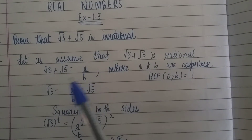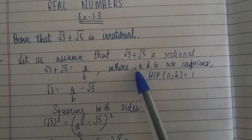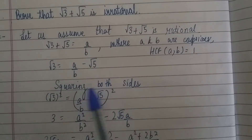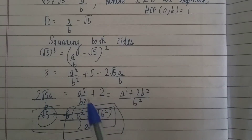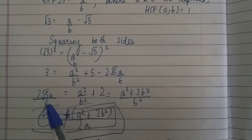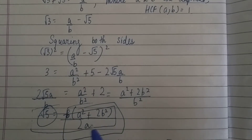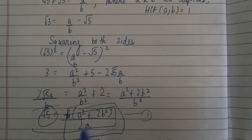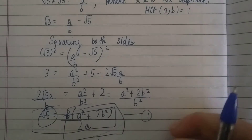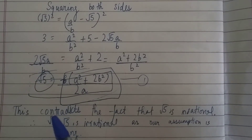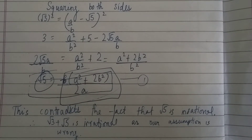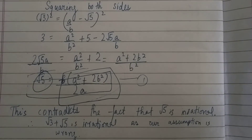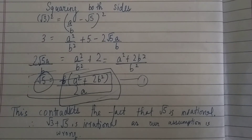To recap: we assumed √3 + √5 is rational and wrote it as a/b where a and b are co-primes with HCF = 1. We rearranged and squared both sides to isolate √5. Since the right-hand side is rational but √5 is irrational, our assumption is wrong — hence √3 + √5 is irrational. This is an important question and you should know its solution.